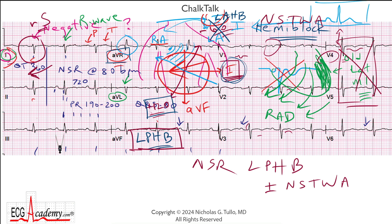So to put everything together, it's fair to say this is simply a normal sinus rhythm with a left posterior hemiblock, plus or minus nonspecific T-wave abnormalities. A lot of cardiologists would just ignore one isolated lead being a little funny looking. Keep in mind that when you see a negative QRS complex in lead 1, you should always check your leads first to make sure you haven't accidentally reversed the right arm and the left arm. But otherwise, this posterior hemiblock finding is something you won't see very often, so make sure you know how to recognize it. Until next time, this is Dr. Nick with the ECG Academy — thanks for watching.